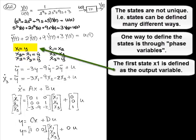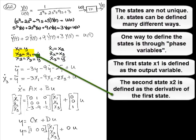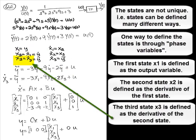The first state X1 is defined as the output variable. The second state X2 is defined as the derivative of the first state. The third state X3 is defined as the derivative of the second state.